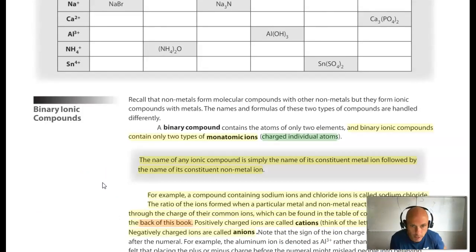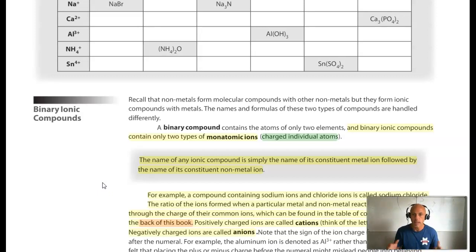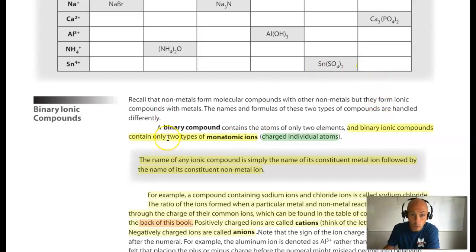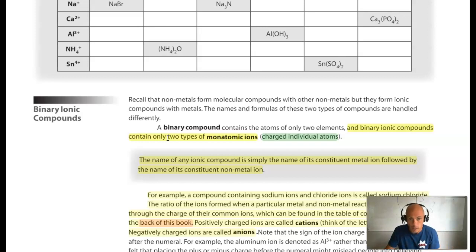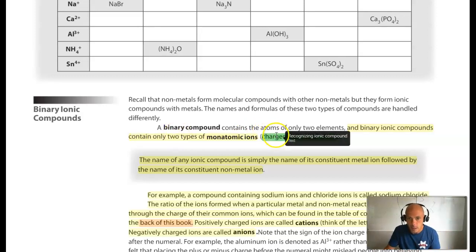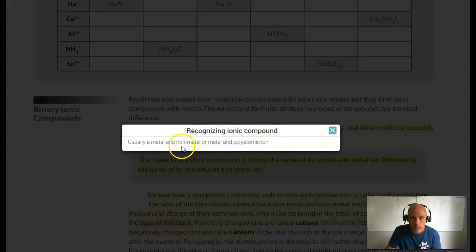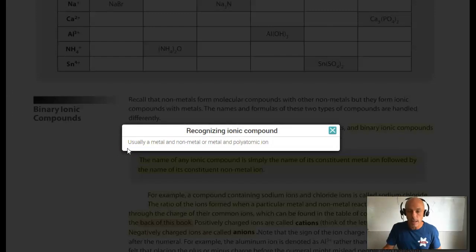First I'm going to talk about ionic compounds, and the first thing I want to mention is how we recognize them. Our textbook tells us that ionic compounds contain only two types of monatomic ions — a positive ion and a negative ion. An ionic compound is usually a metal and a nonmetal, or a metal and a polyatomic ion.